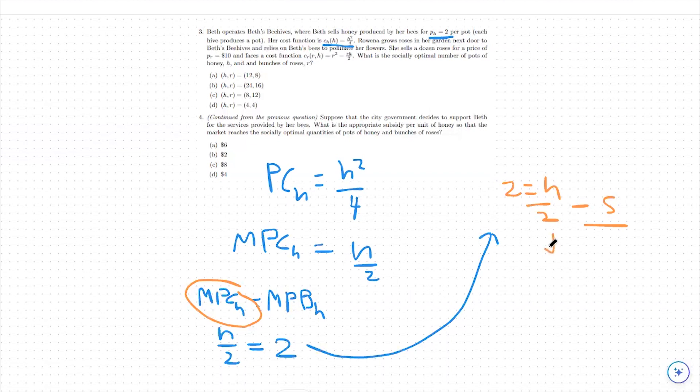So next, what we can do is say that we know our socially optimal amount of honey is 12 because we found that answer choice A was the best fit for question 3. So 2 equals 12 over 2 minus S will be our optimizing condition. We're just trying to find the subsidy that gets us to this level where we're producing exactly 12 honeypots, which is socially optimal.